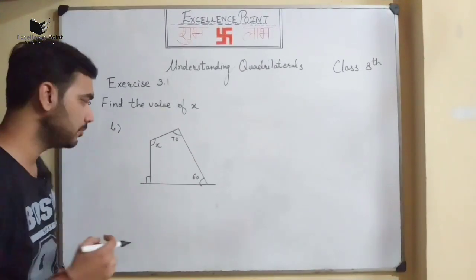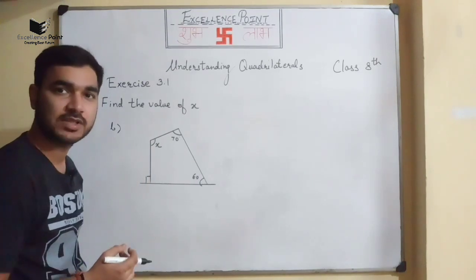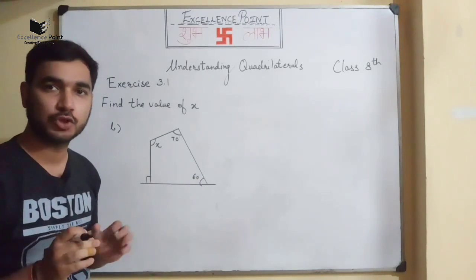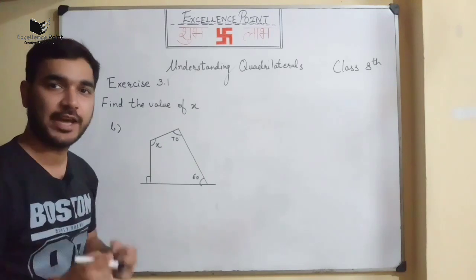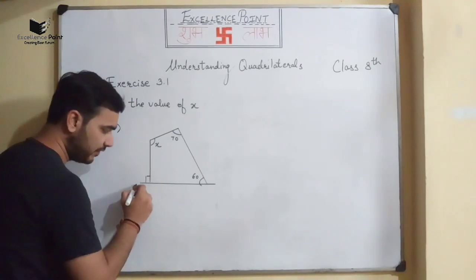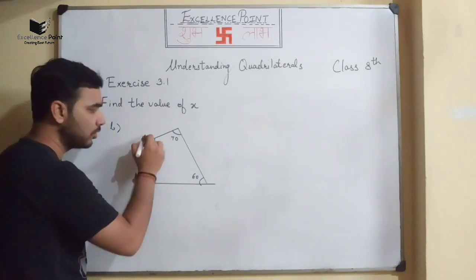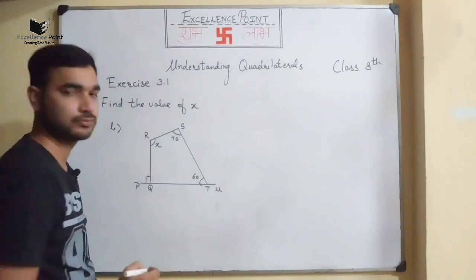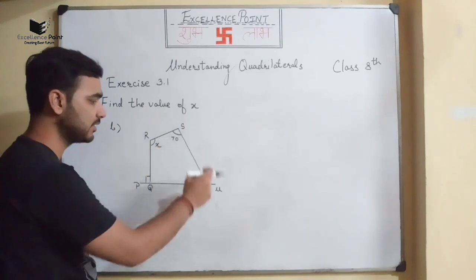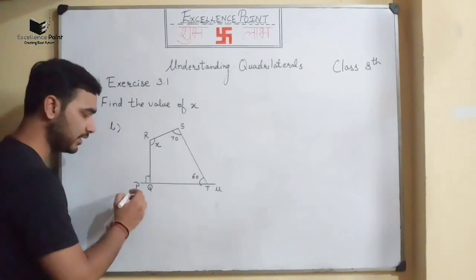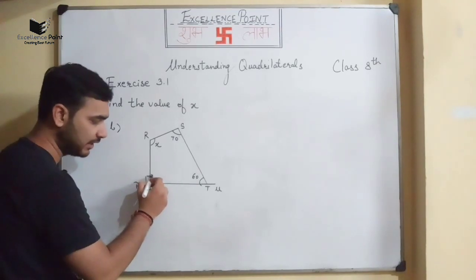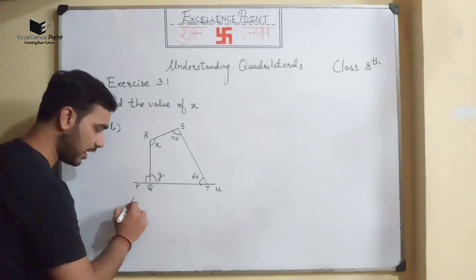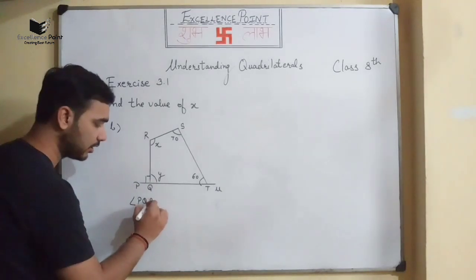In question number B, 90° is outside the quadrilateral, and x, 60°, and 70° are given. We have to find the value of x. We will name the vertices P, Q, R, S, T, and U. Let the interior angle at Q be equal to y.